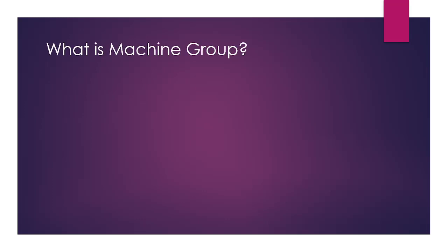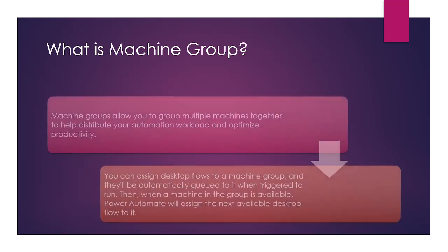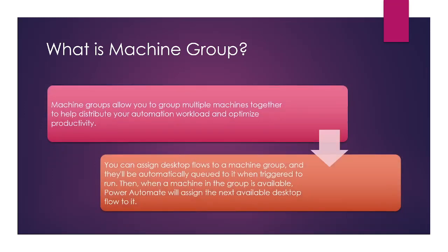In today's video we are going to learn about machine groups. Machine groups allow you to group multiple machines together to help distribute your automation workload and optimize productivity. You can assign desktop flows to a machine group and they will be automatically queued to it when triggered to run.